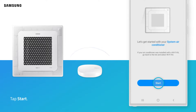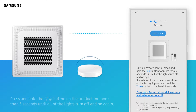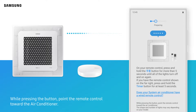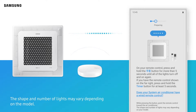Tap Start. Press and hold the Mu-Pung button on the product for more than 5 seconds until all of the lights turn off and on again. If you have the remote control shown on the far right, press and hold the timer button for at least 5 seconds. While pressing the button, point the remote control toward the air conditioner. Note that the shape and number of lights may vary depending on the model.